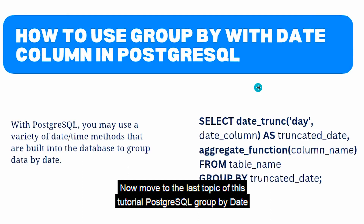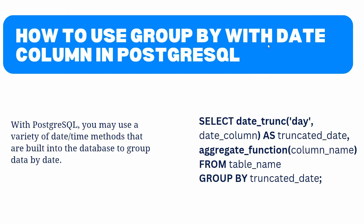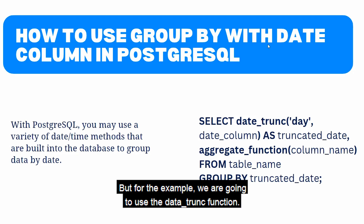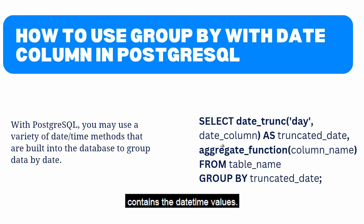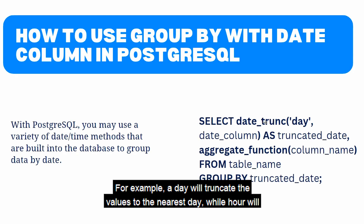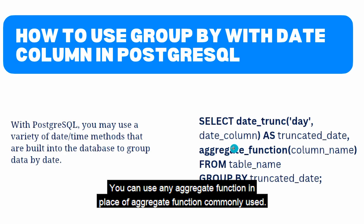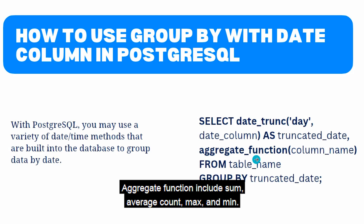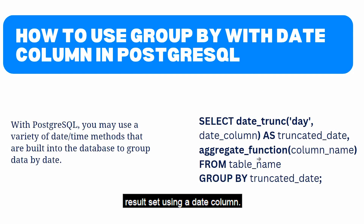Now let's move to the last topic: PostgreSQL GROUP BY date. In PostgreSQL you can group by date using various datetime functions. The most commonly used functions are date_trunc and to_char. For this example we will use the date_trunc function. You replace the date column placeholder with the column containing datetime values and the column name with the column you want to aggregate. The date_trunc function truncates datetime values to a specific level of granularity — for example, 'day' truncates to the nearest day and 'hour' to the nearest hour. Commonly used aggregate functions include SUM, AVG, COUNT, MAX, and MIN.